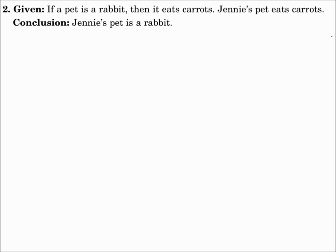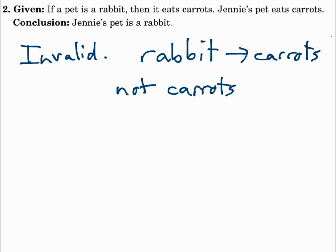Well, this doesn't flow. The general P to Q is if it's a rabbit, then it eats carrots. So the next specific part should go from rabbits to carrots. And it doesn't. It goes from carrots to rabbits. So this is invalid. It does not flow properly.